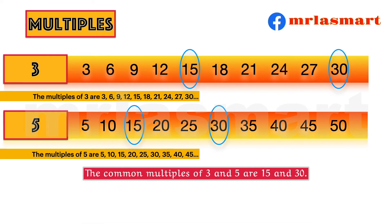The common multiples of 3 and 5 are 15 and 30. The least common multiple is 15.